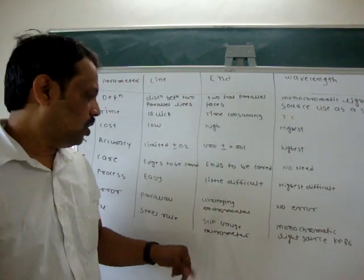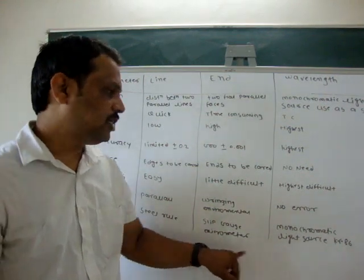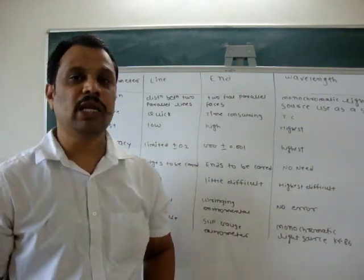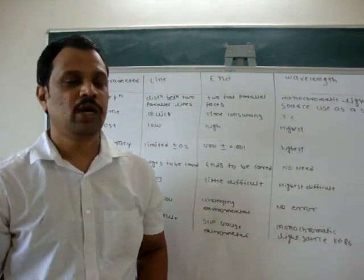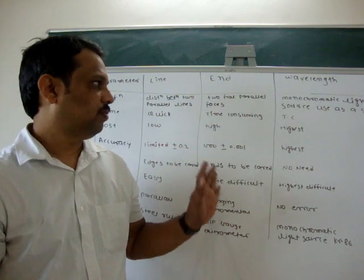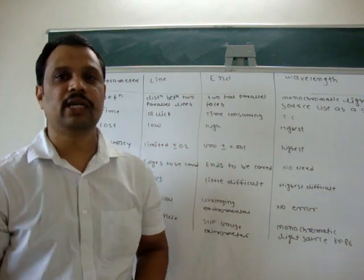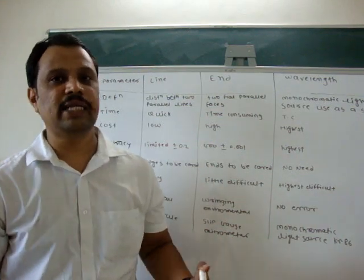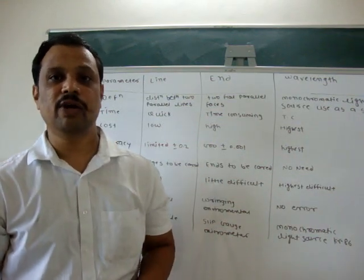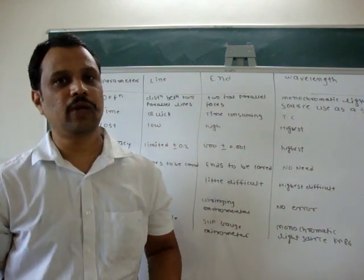Examples: steel rule, slip gauges, and monochromatic light source. This is the difference between line standard, end standard, and wavelength standard. Thank you.